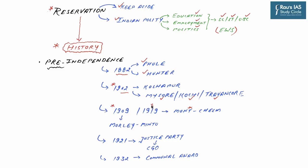The Morley-Minto reforms of 1909 and Montagu-Chelmsford reforms of 1919 also contained provisions related to separate electorates. Another milestone came in 1921 when the Justice Party in the then state of Madras brought out legislation termed as the Communal Government Order — the first legislation on reservation by an elected body. In 1932, the Communal Award was announced by British Prime Minister Ramsay MacDonald, followed by the Poona Pact between Mahatma Gandhi and Dr. B.R. Ambedkar.